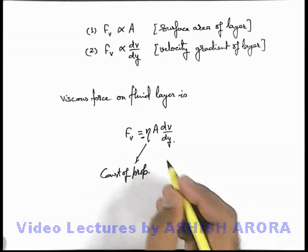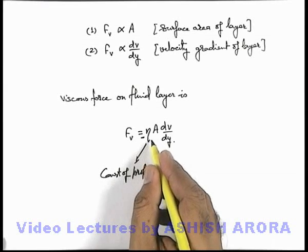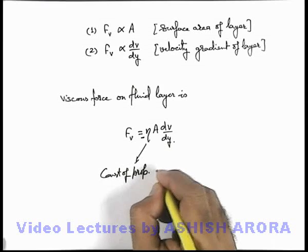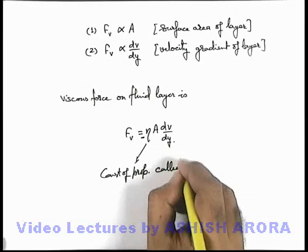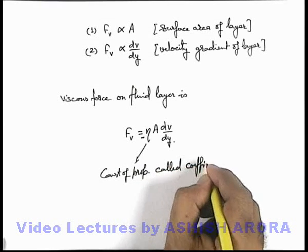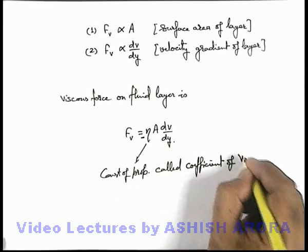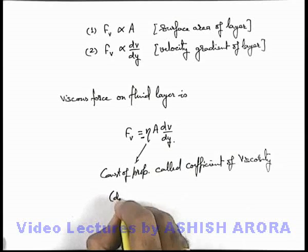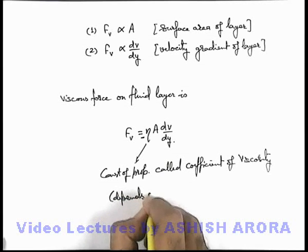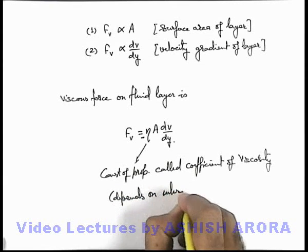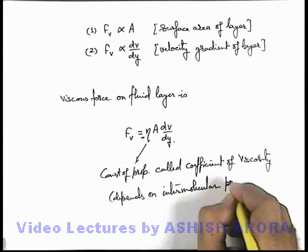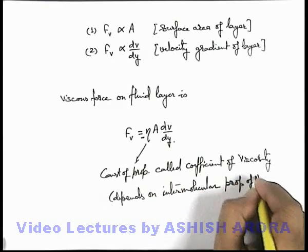Which depends on the intermolecular properties of the liquid. And this is the constant of proportionality called coefficient of viscosity. This coefficient we can write that it depends on intermolecular properties of the fluid.